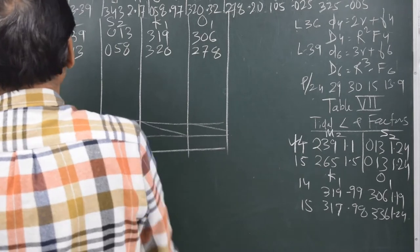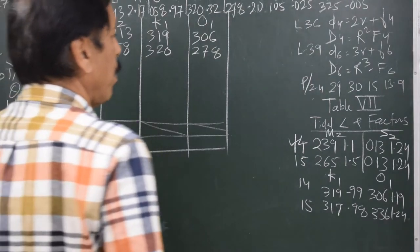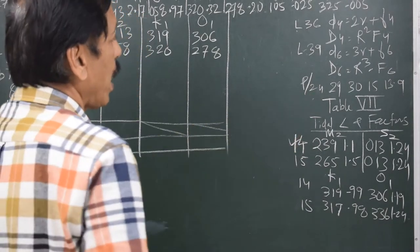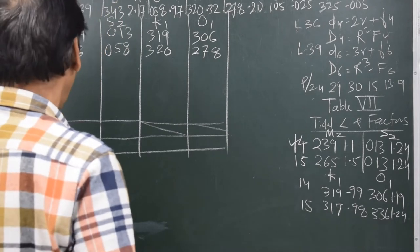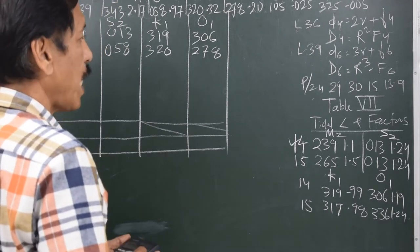P upon 24 values are 29, 30, 15 and 13.9 respectively. The local time is 8 o'clock.